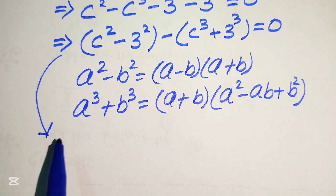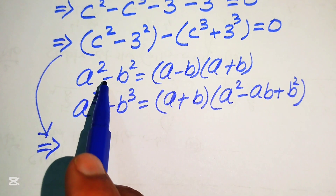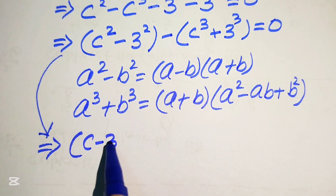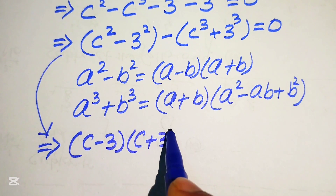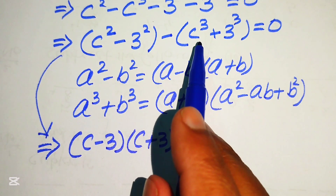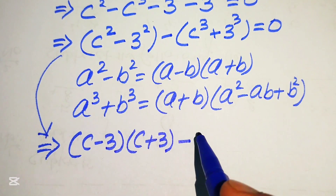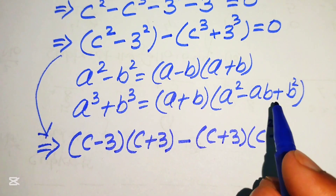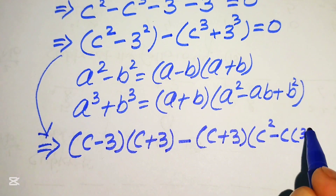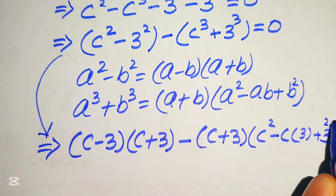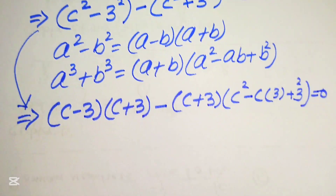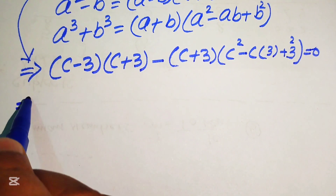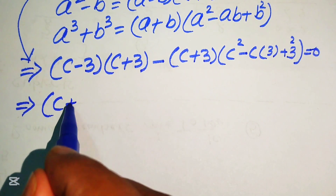Applying the square identity to c squared minus 3 squared gives (c minus 3)(c plus 3). Applying the sum of cubes identity to c cubed plus 3 cubed gives (c plus 3)(c squared minus 3c plus 9), where a is c and b is 3. The full equation equals 0. In the next step we focus on these two terms and identify c plus 3 as the common factor.